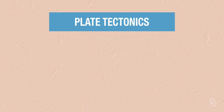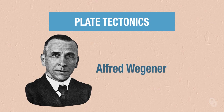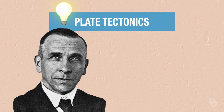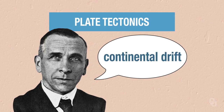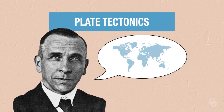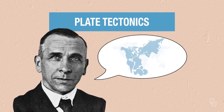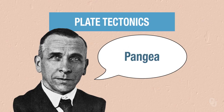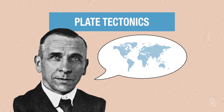In previous videos, we have discussed the basics of plate tectonics. Now we're going to go into some more detail and present some of the evidence for the theory. The overall theory of plate tectonics started with Alfred Wegener in 1912 to 1915. He proposed the hypothesis of continental drift, suggesting the continents were all together at one time in a supercontinent called Pangaea, and then they separated to produce the current configuration.